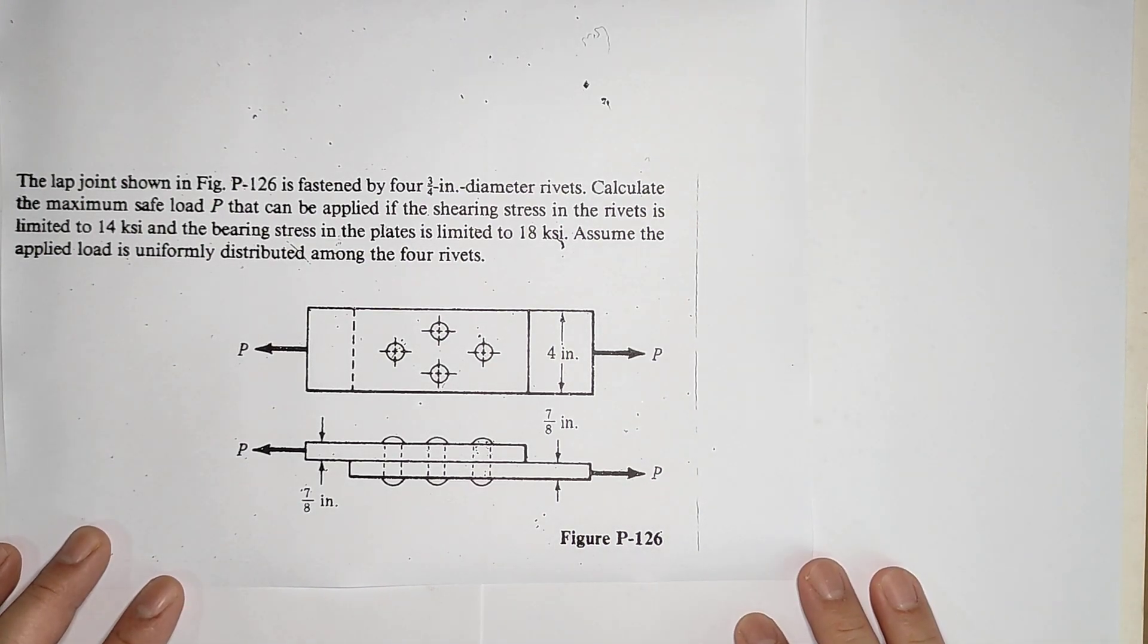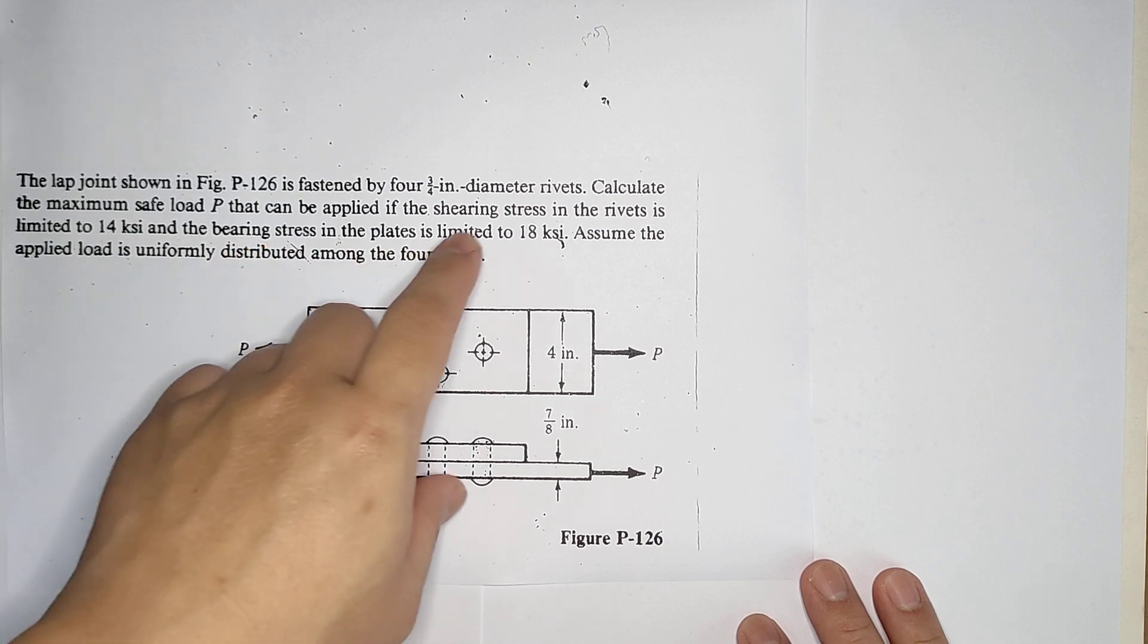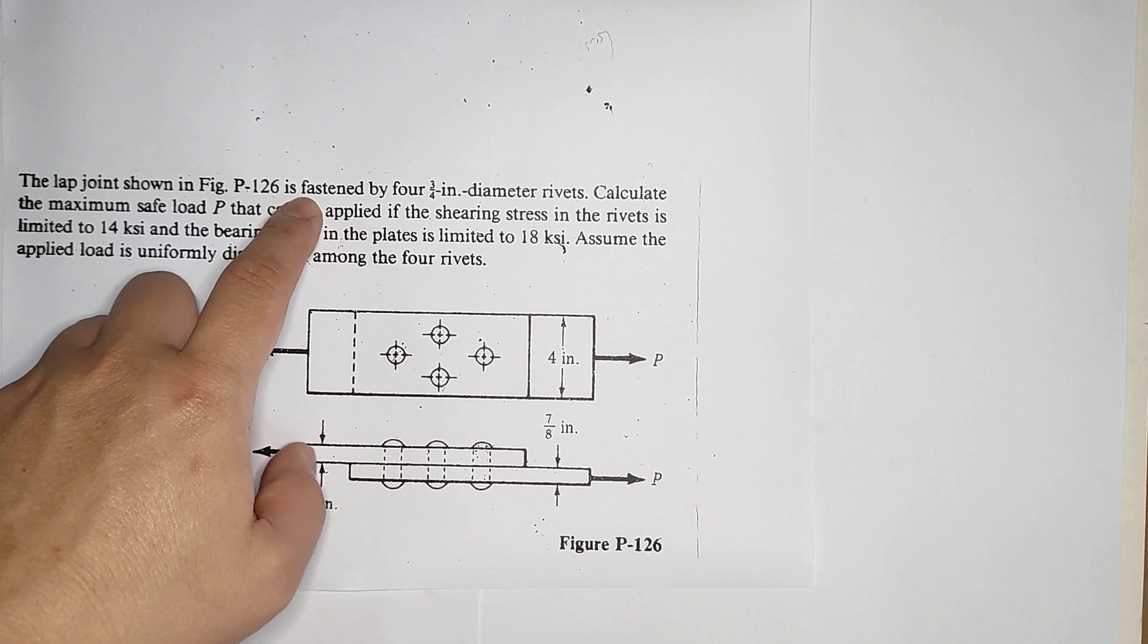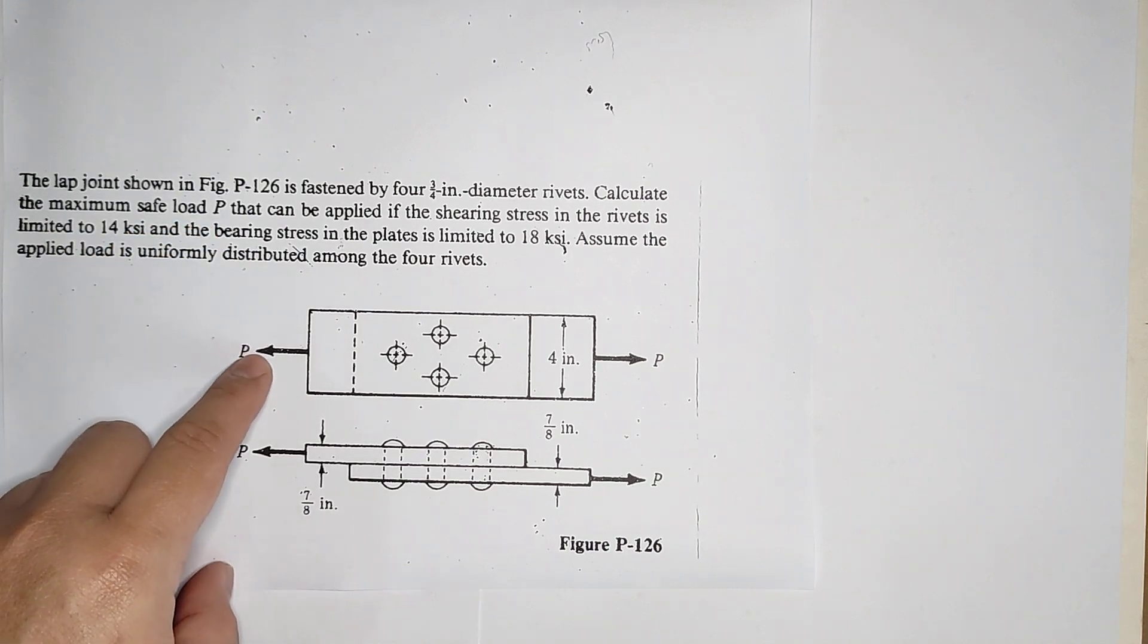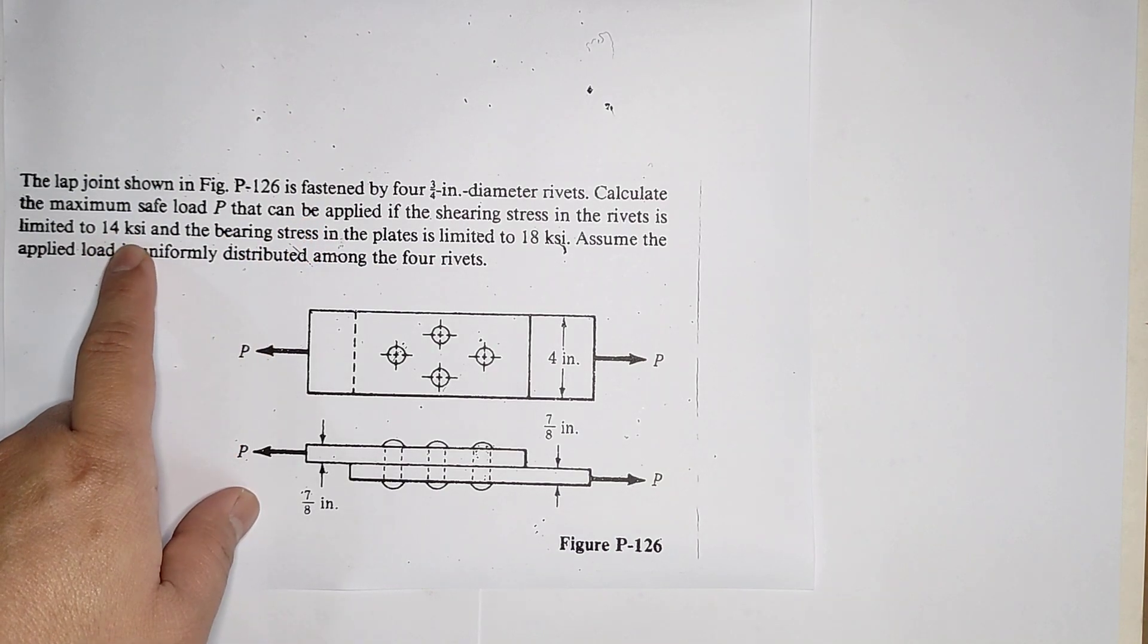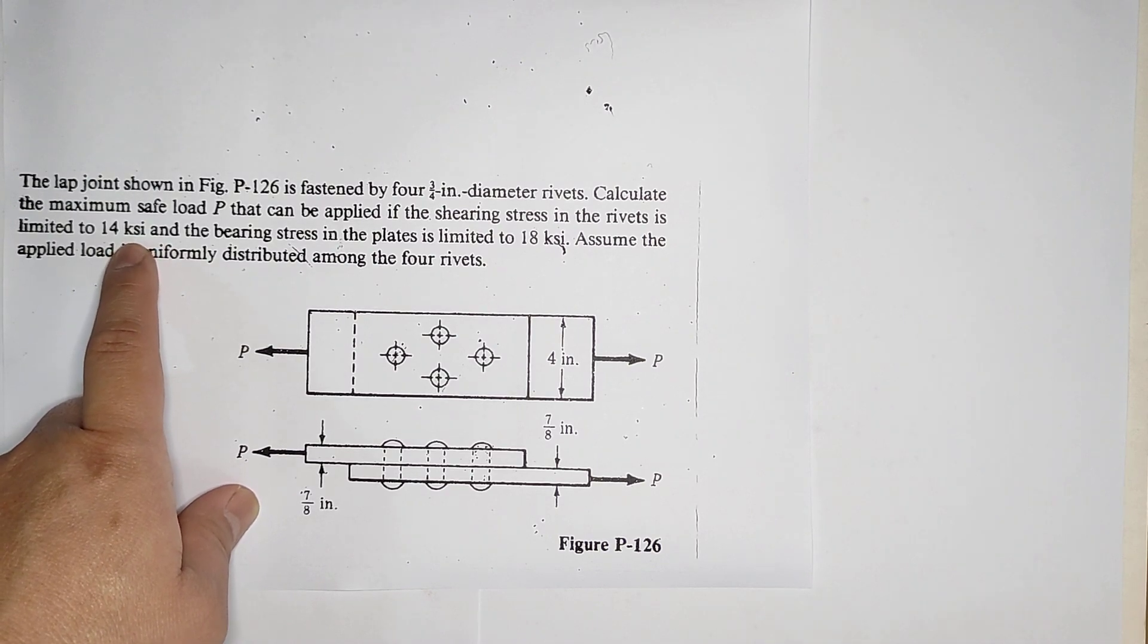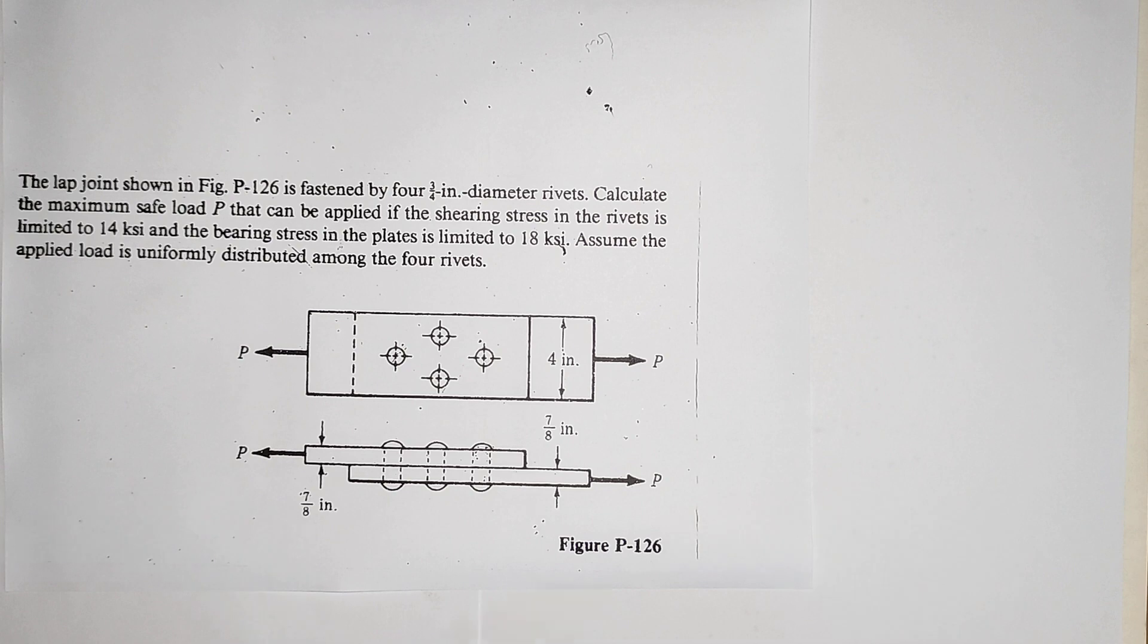We're going to compute for the force P with criteria in terms of bearing stress and shearing stress. This is problem 126: the lap joint shown in figure 126 is fastened by four three-fourth inch diameter rivets. Calculate the maximum safe load P that can be applied if the shearing stress in the rivets is limited to 14 KSI and the bearing stress in the plate is limited to 18 KSI. Assume the applied load is uniformly distributed among the four rivets.